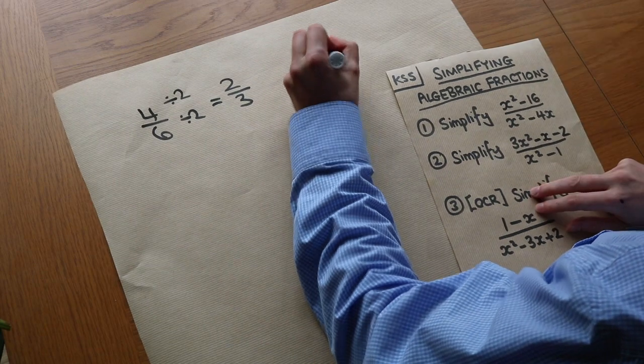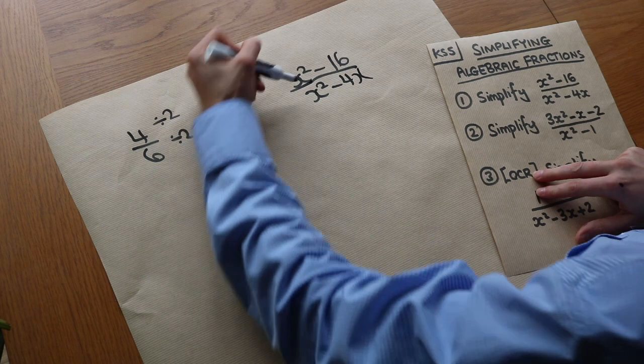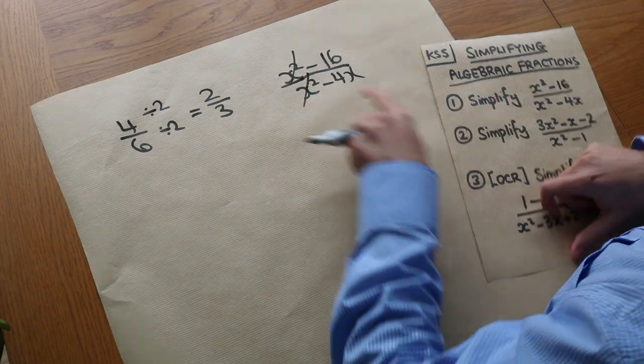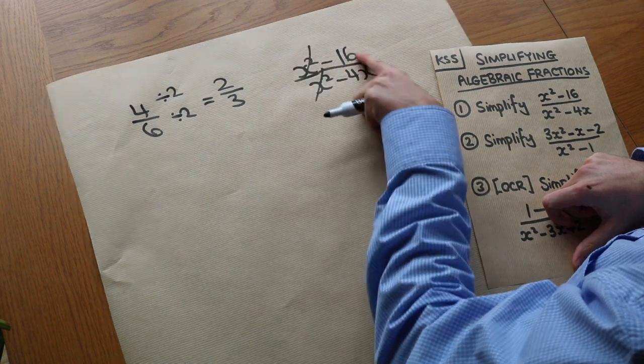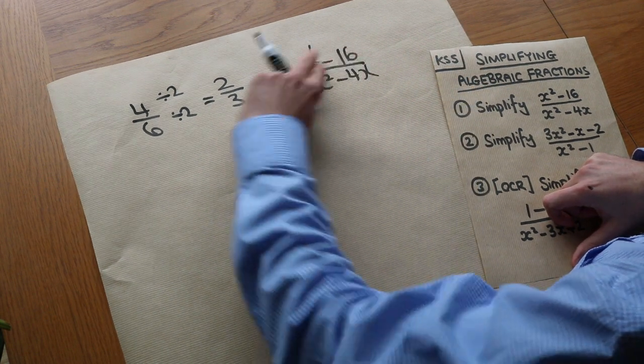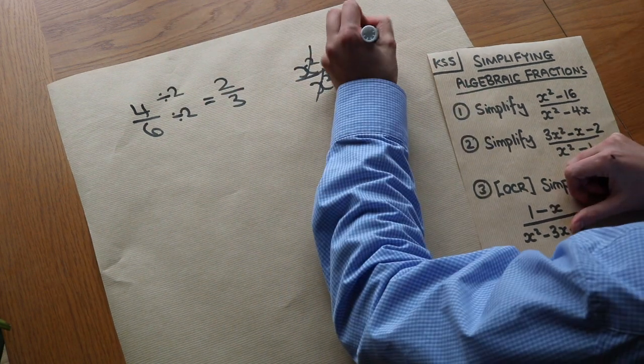For example, if I had x squared minus 16 over x squared minus 4x, then you can absolutely not just cross out those x squareds there because when you do so you haven't divided the top by x squared, you've actually subtracted x squared. To get from x squared minus 16 to just minus 16, you've actually subtracted x squared. So we cannot do that.